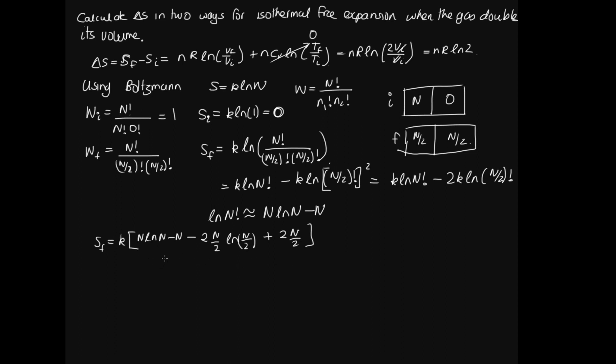So now we want to simplify a bit. Here we've got a minus N and this thing here is a plus N. So that cancels. And so we have K N log N minus, these 2's cancel, so this is equal to N log N on 2.